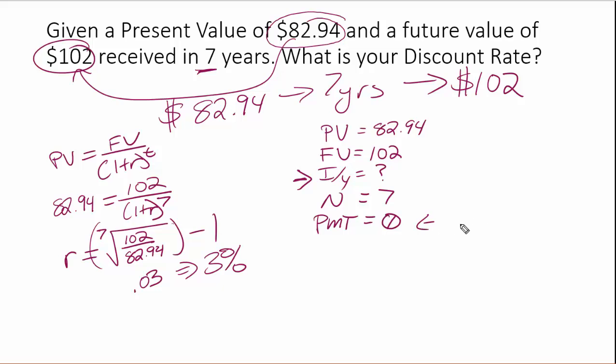Remember, this part here is the annuity portion. That's when we have repeating payments going on. But in this case, we don't have those. If we have one value going to another, that payment's going to be 0.